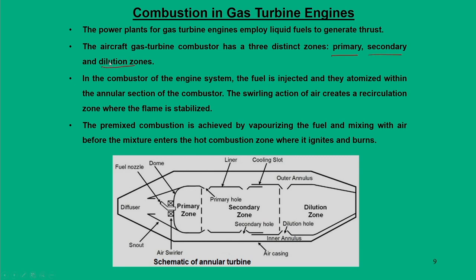Compressed air from the compressor enters the combustor. Fuel nozzles are incorporated in the primary zone, and fuel is injected into the high-speed air where mixing takes place. With multiple nozzles injecting fuel into air at multiple locations of the annular space, the mixing and atomization occurs within the annular section at elevated temperatures.